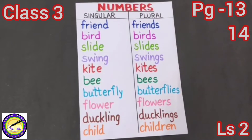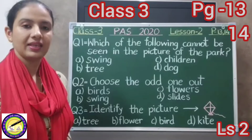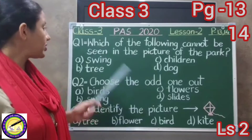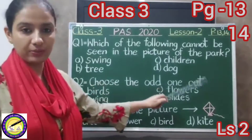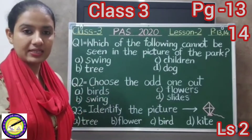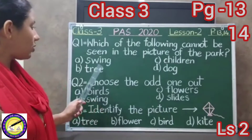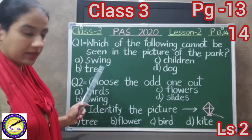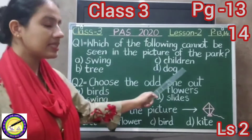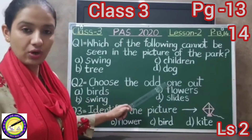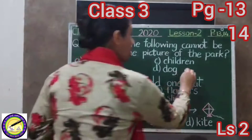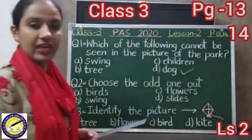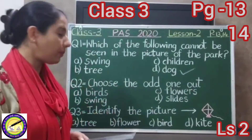So children, let us answer some multiple choice questions. The first question is: which of the following cannot be seen in the picture of the park? The options are: A — swing, B — tree, C — children, D — dog. Dog is the correct option. We cannot see a dog in the picture of the park.